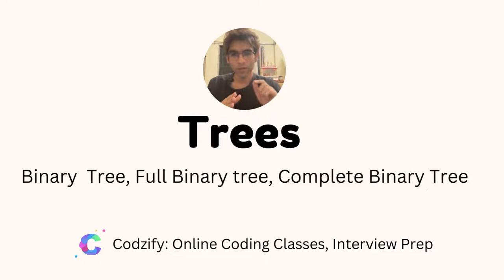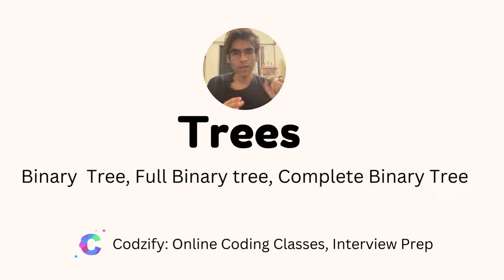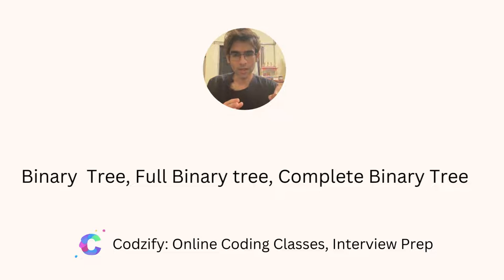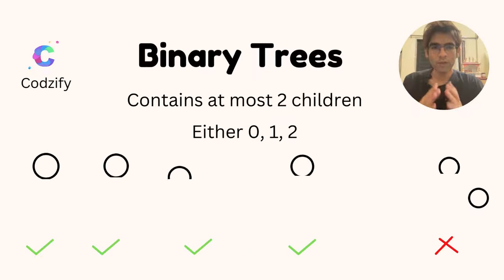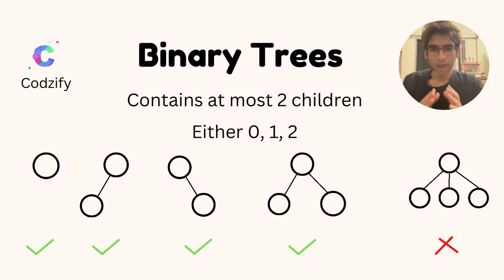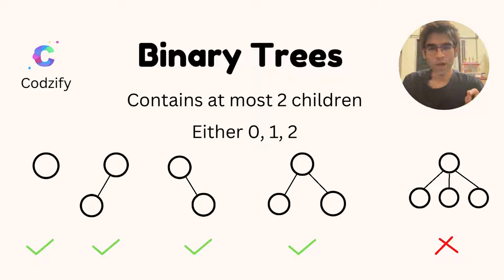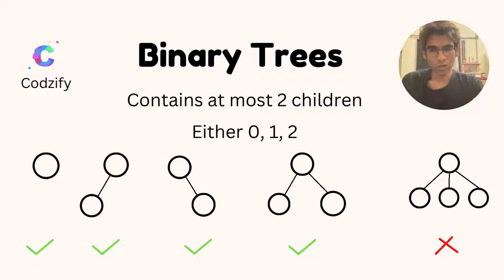In this video we will discuss about binary tree, full binary tree, and complete binary tree. A binary tree is a data structure which contains at most 2 children. At most means either 0, 1, or 2 children.